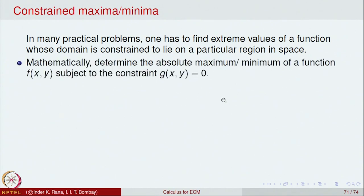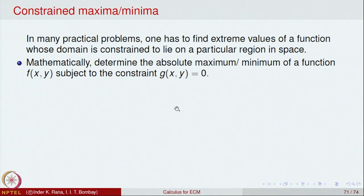To illustrate this mathematically: given a function of two variables f, we want to maximise or minimise it subject to some relation between x and y, written as g(x, y) = 0. So f(x, y) is to be maximised or minimised with the constraint g(x, y) = 0. There is an algorithm for solving such problems for two and three variables.